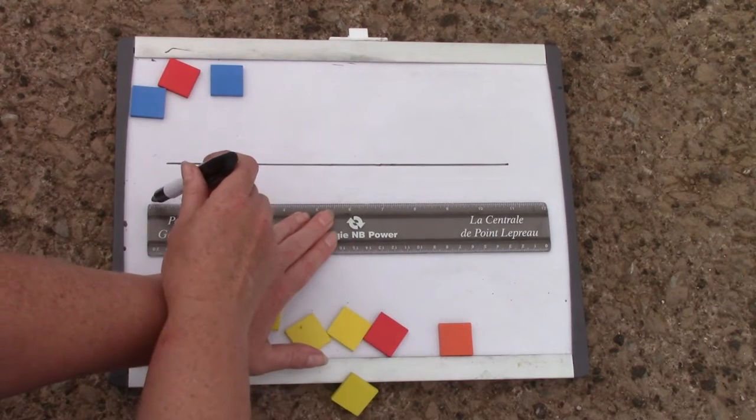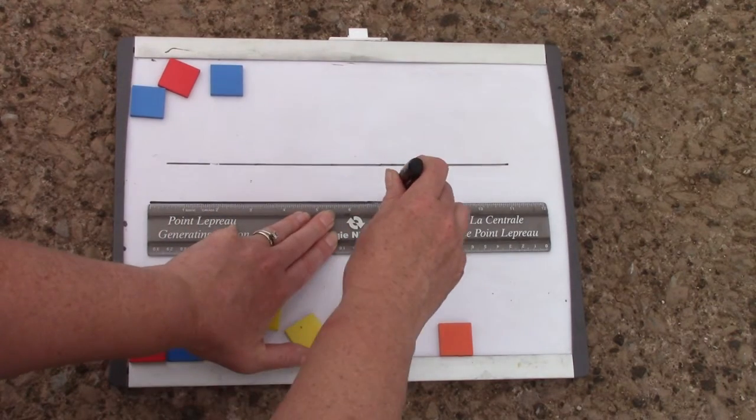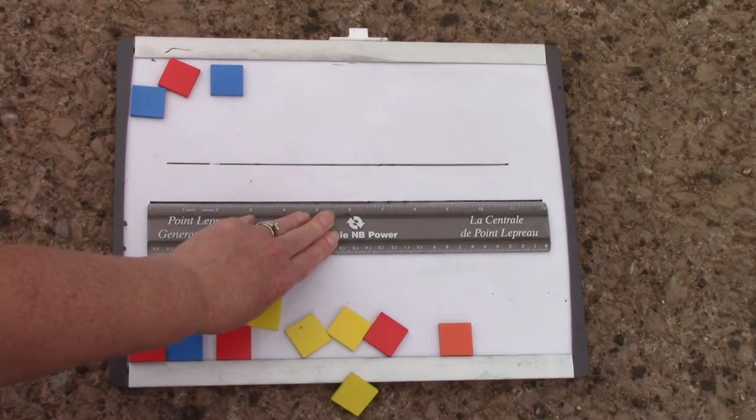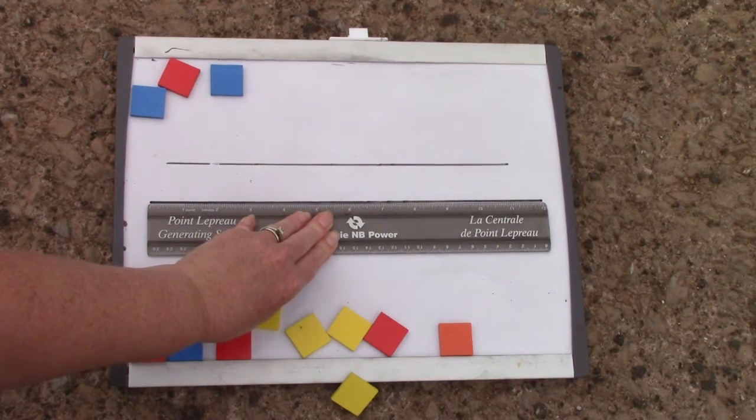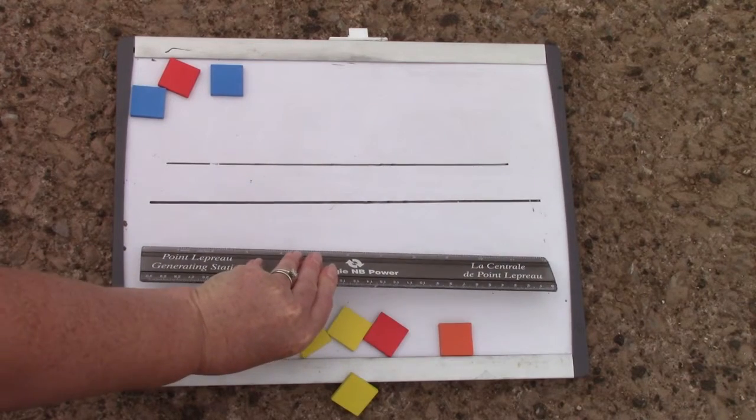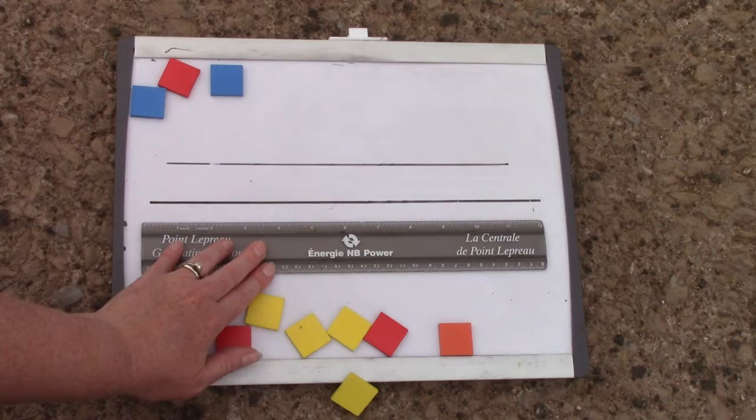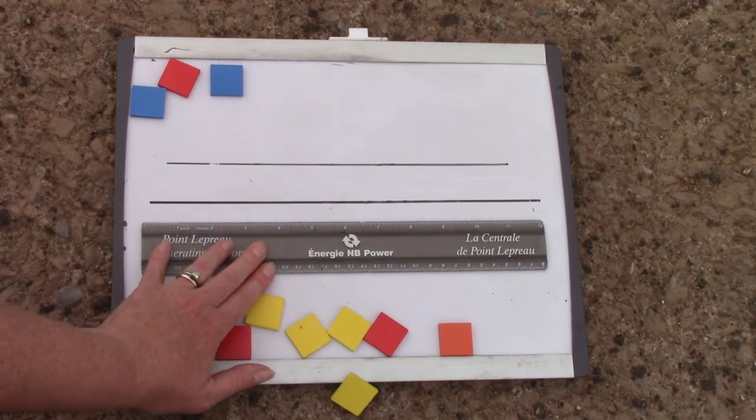Now I'm going to make a line starting at zero on my ruler and going all the way to the end, 12 inches or 30 centimeters. Could you make a line that is as long as your ruler? Give it a try.